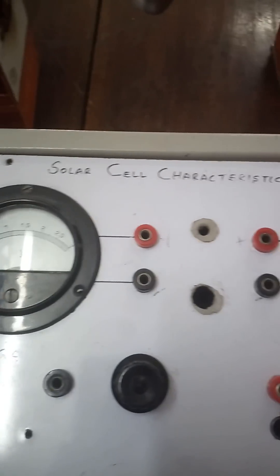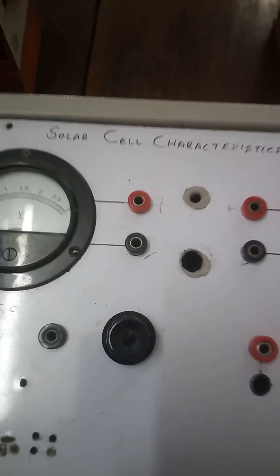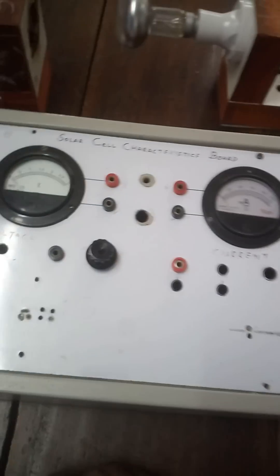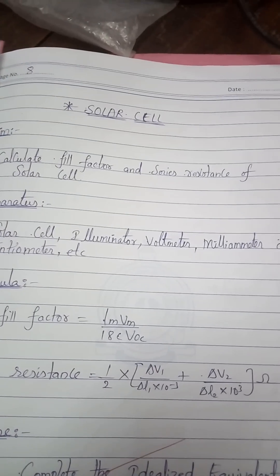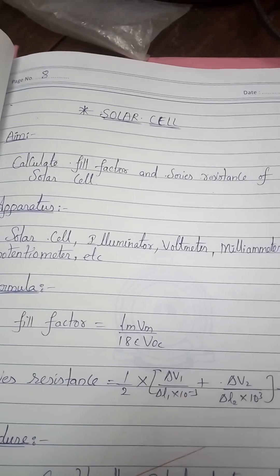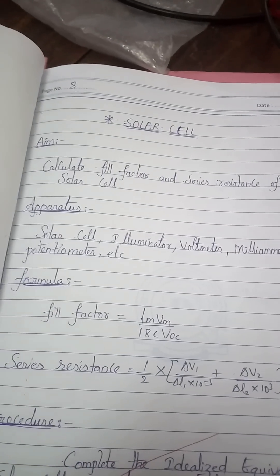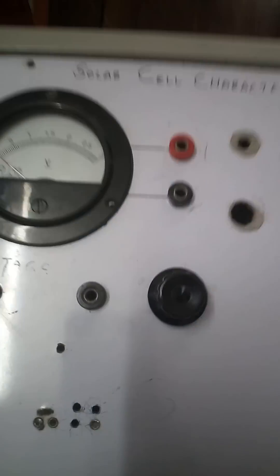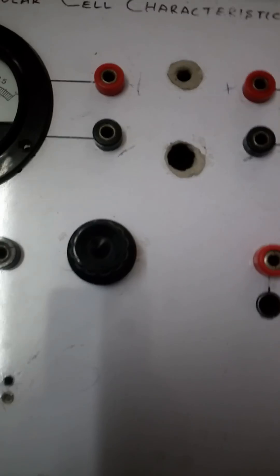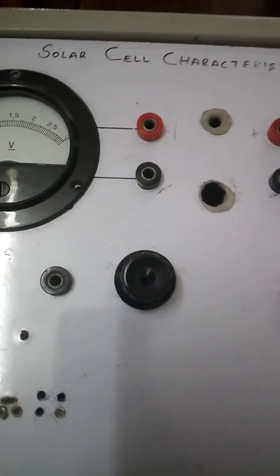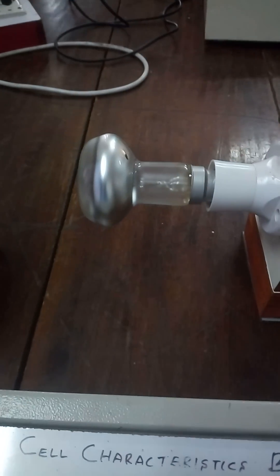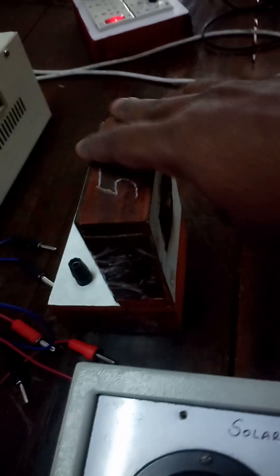Today we are going to learn about solar cell characteristics. This is the solar cell characteristics board. The aim of the experiment is to calculate the fill factor and series resistance of a solar cell. The apparatus required includes a voltmeter, an ammeter, a power supply, and a light source to provide photons to the solar cell.